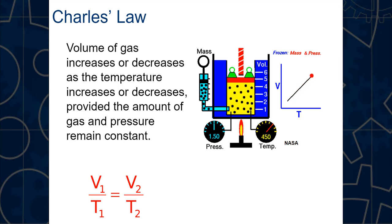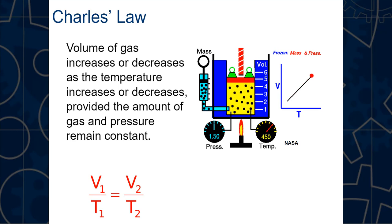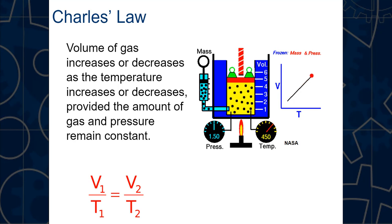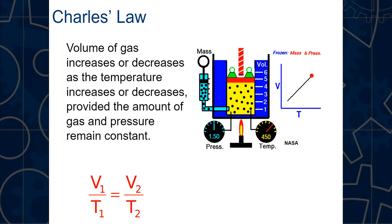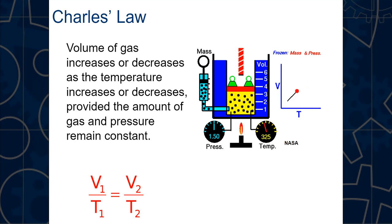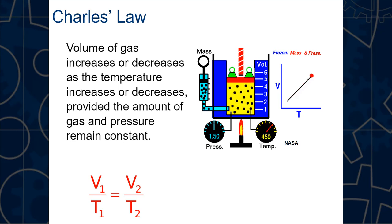Charles's Law: the constant here is pressure. As temperature increases, the volume increases proportionally — it's a straight line. The volume of a gas increases or decreases as temperature increases or decreases, provided the amount of gas and pressure remain constant. The formula is V₁/T₁ = V₂/T₂. Keep V and T paired together since we'll be cross-multiplying.